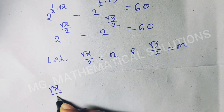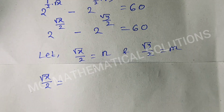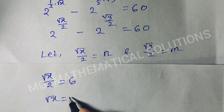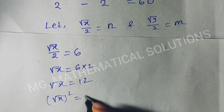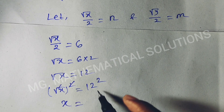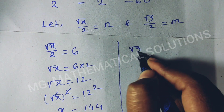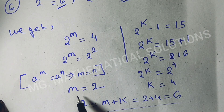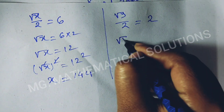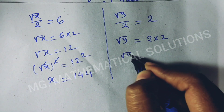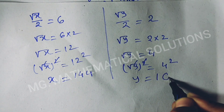Root x over 2 equal to n, and the value of n is 6, so root x equal to 6 times 2, root x equal to 12. Squaring both sides, x equal to 12 squared, which means x equal to 144. Root y over 2 equal to m, the value of m is 2, so root y equal to 2 times 2, root y equal to 4. Squaring both sides, y equal to 4 squared, so y equal to 16.